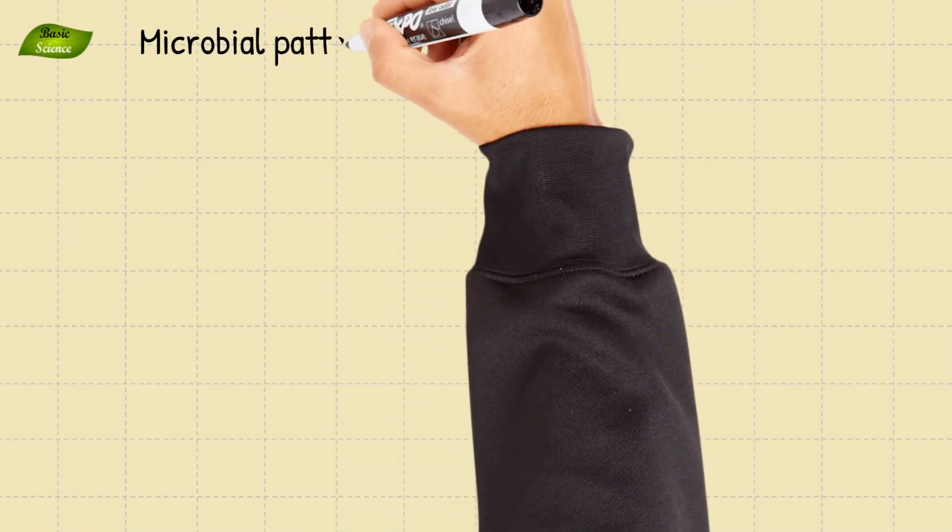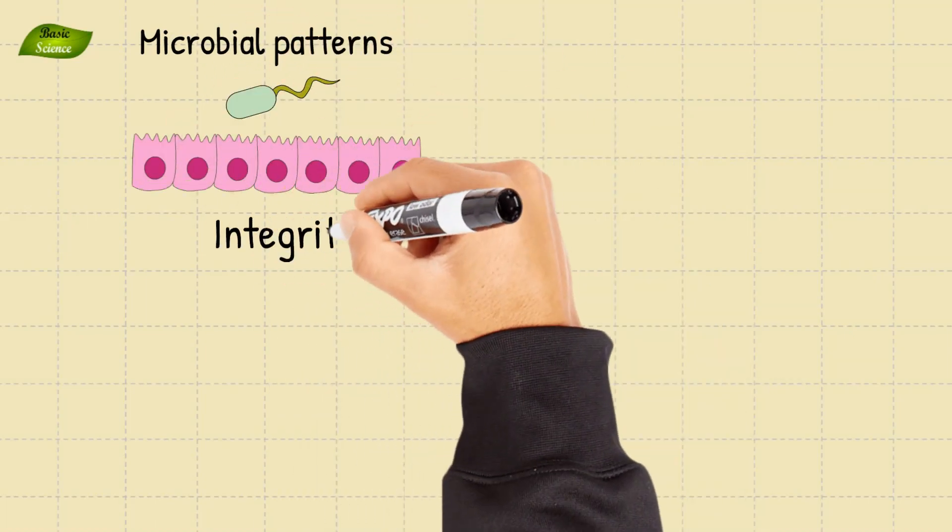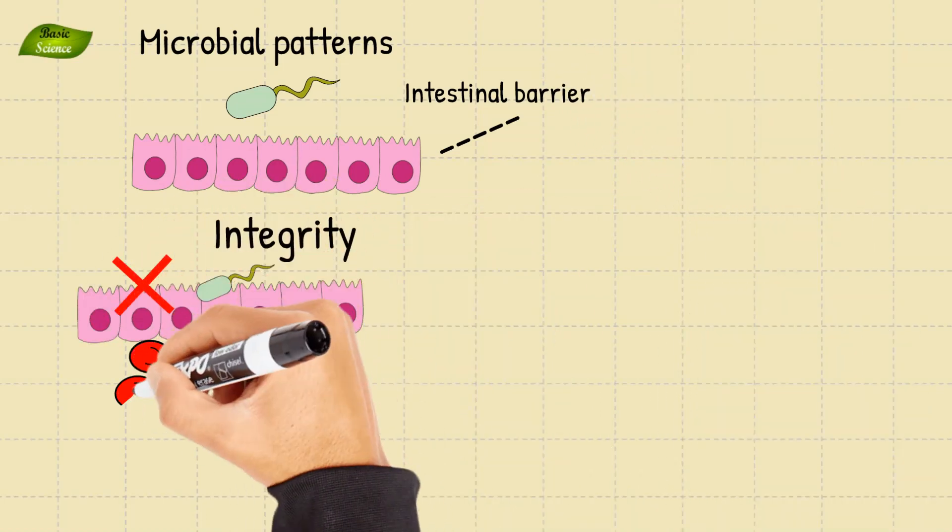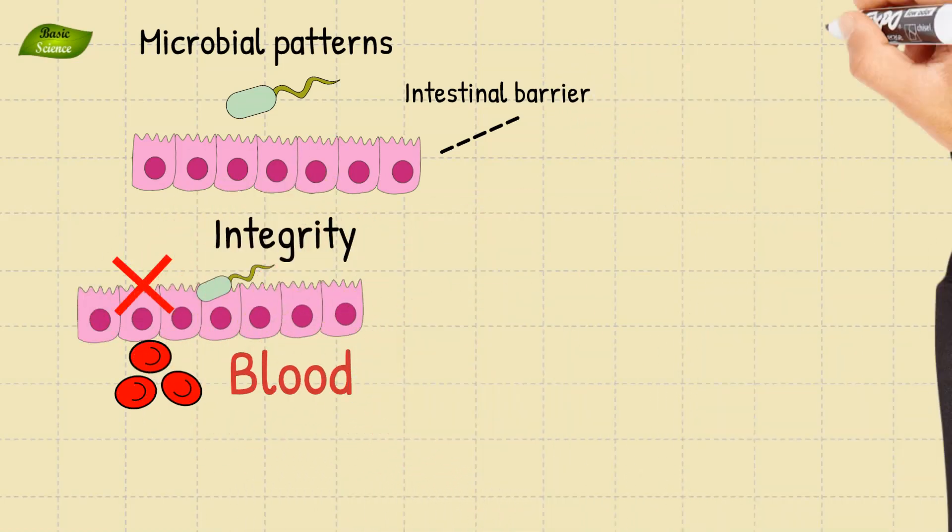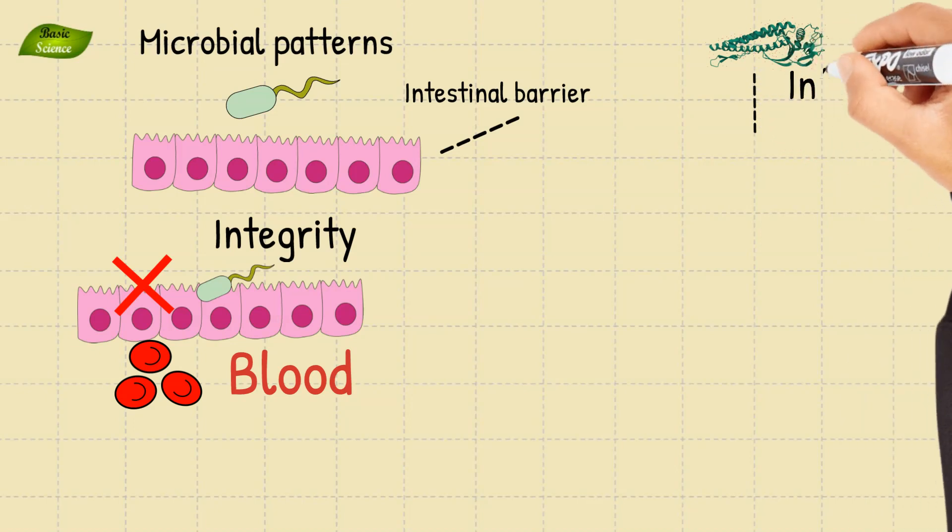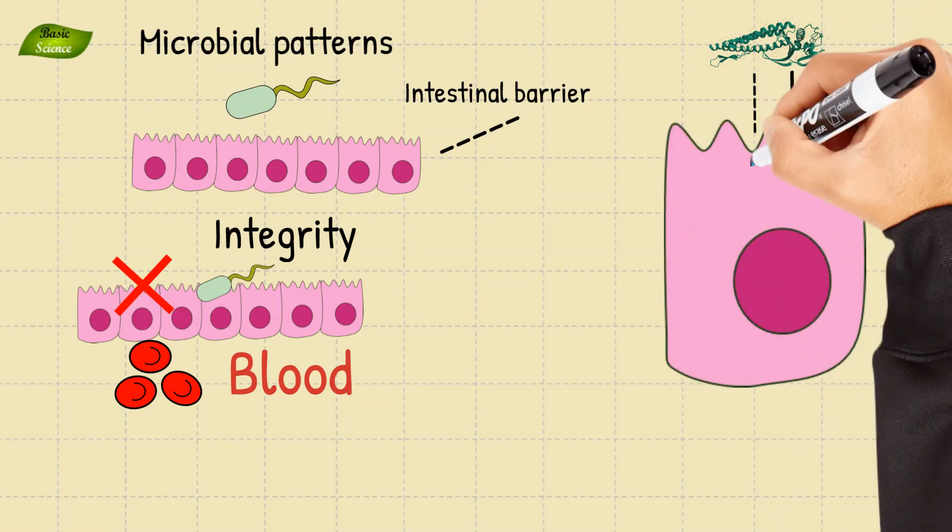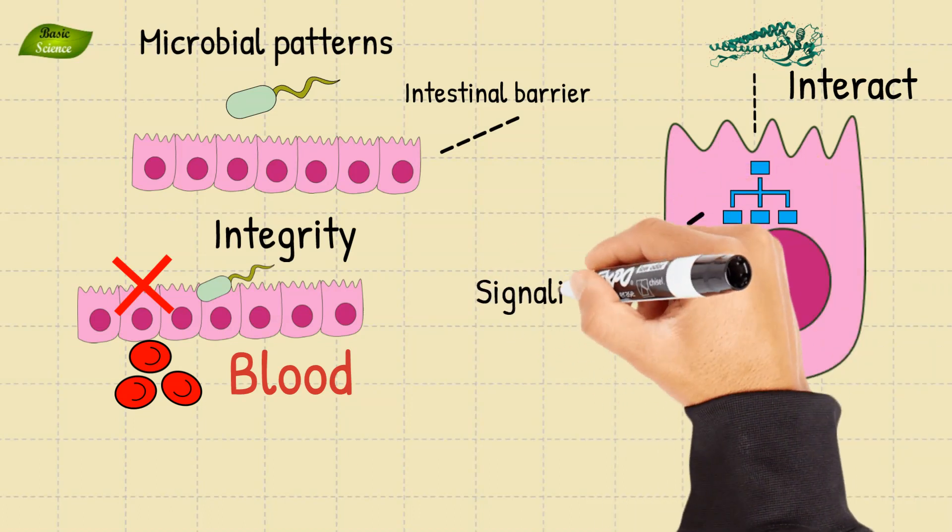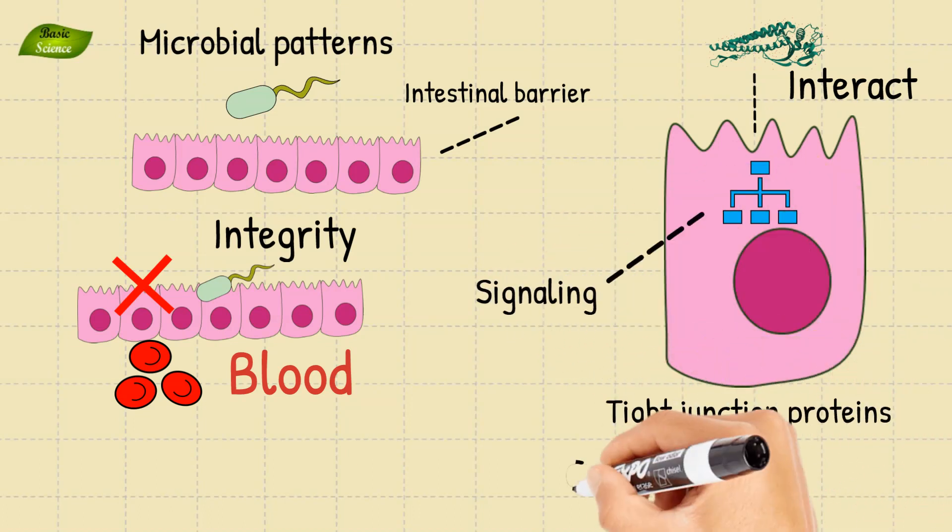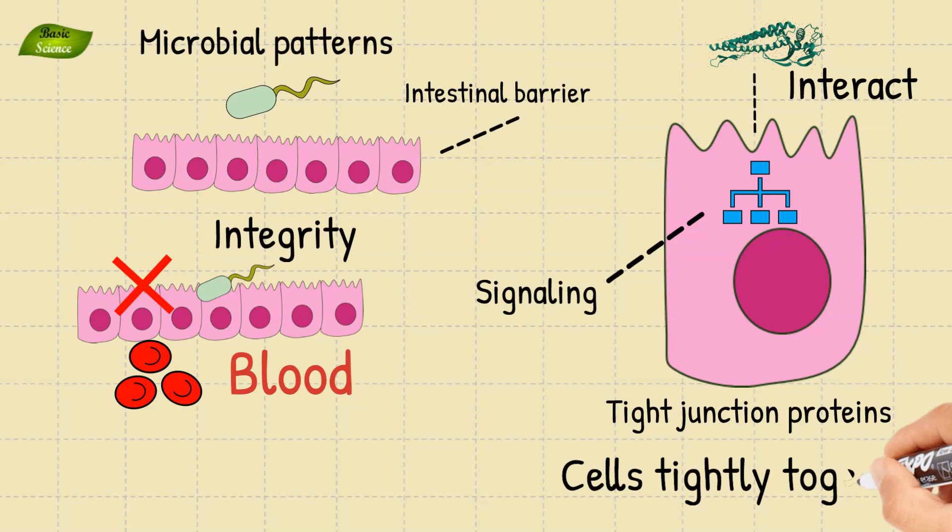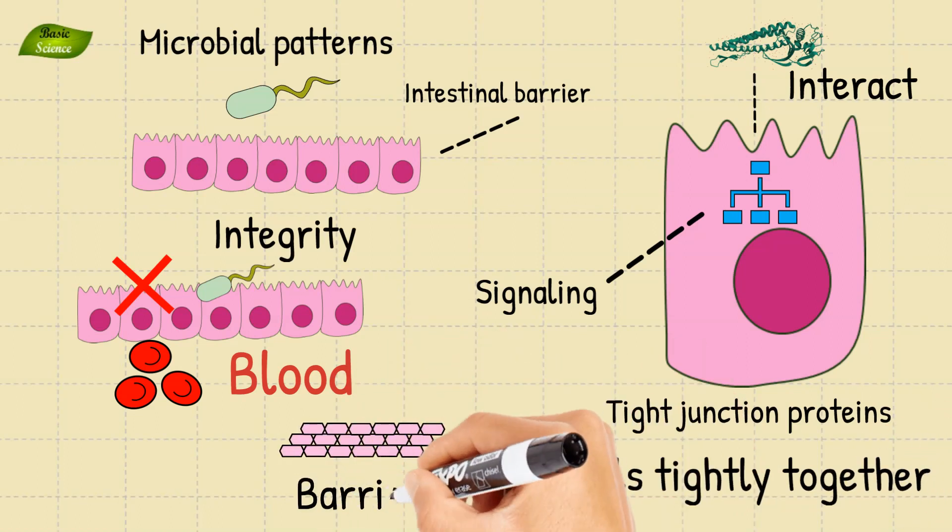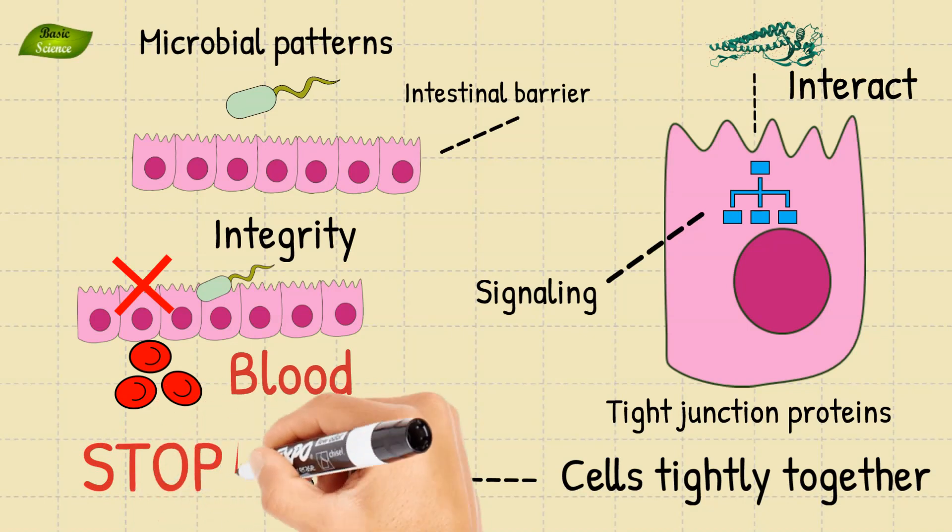Microbial patterns can help maintain the integrity of the intestinal barrier, which prevents pathogenic bacteria from entering the bloodstream. Microbial patterns interact with the intestinal epithelium, triggering signaling pathways that promote the production of tight junction proteins. These proteins bind adjacent epithelial cells tightly together, forming a remarkable barrier that restricts the passage of unwanted substances.